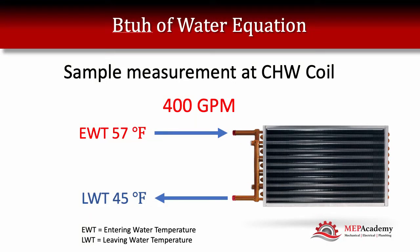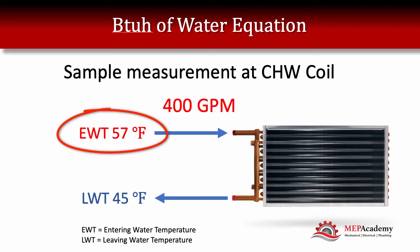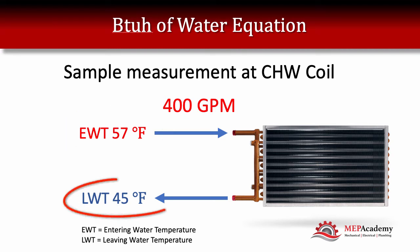For our sample here, we have a water-cooled chiller, and we've measured 400 GPM. Looking at the gauges or thermometers, we have 57 degrees entering water temperature — that would be our chilled water return coming back from the air handlers or fan coils. Our leaving water temperature gauge, our chilled water supply, shows 45 degrees — that's the water going out to the air handlers and fan coils.